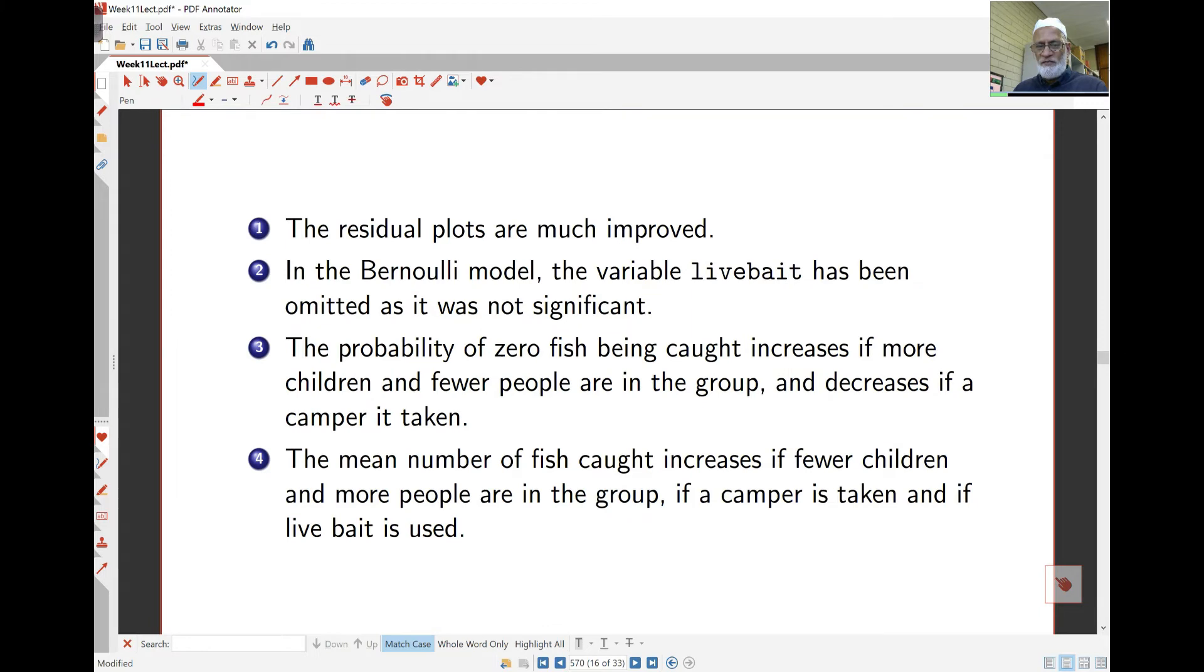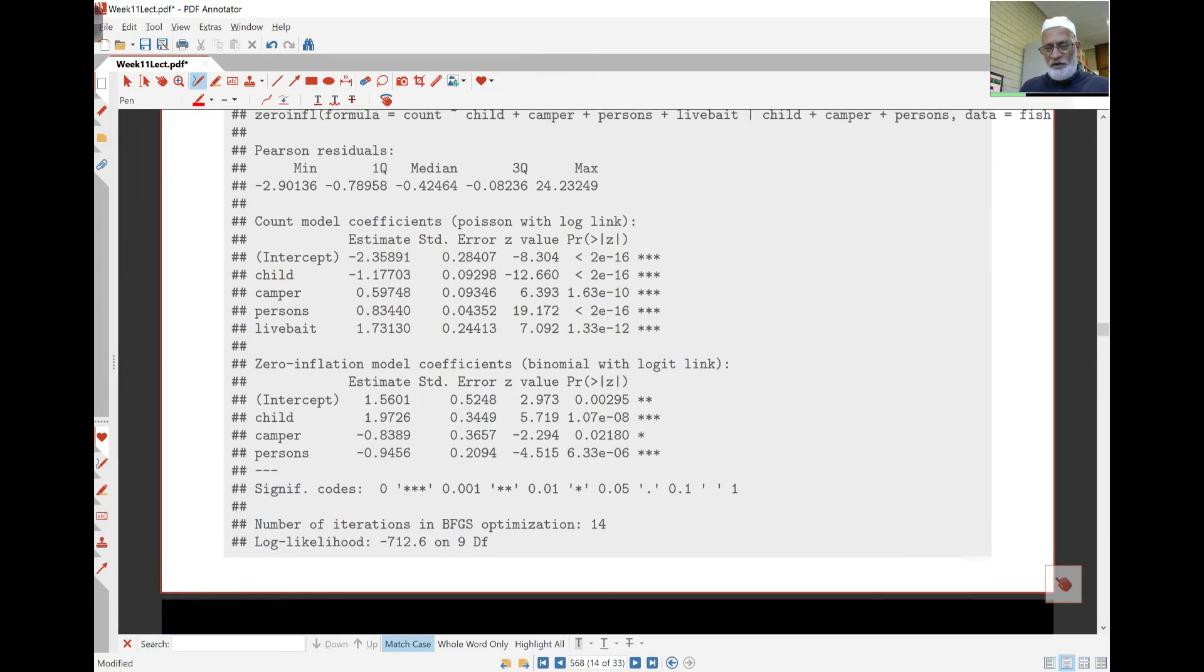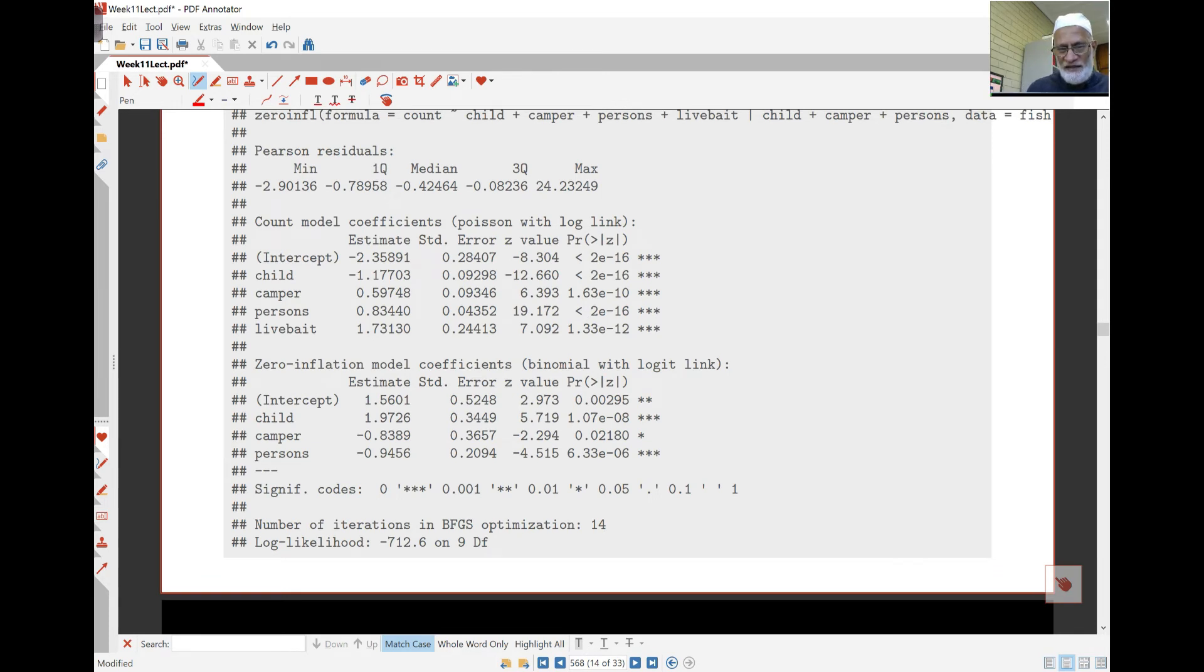The model here is much simpler as I said here. Now if you look at the model as it stands here, you see the probability of getting zero fish. These three variables affect that. So if there are more persons, then the number of zero fish caught has a high probability. If the camper is taken, probability of catching no fish is also increased. And if there are more children, probability of no fish is also increased. If you look at the Poisson part of the model, let's start with live bait. If you have live bait, you get more fish.